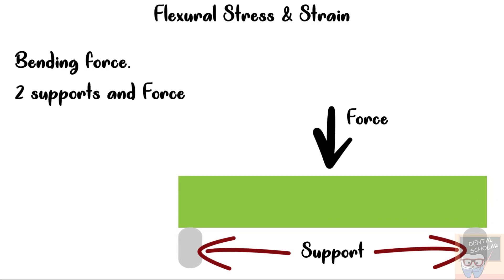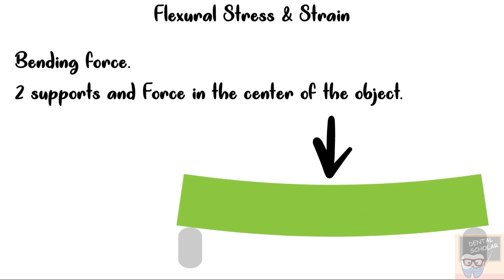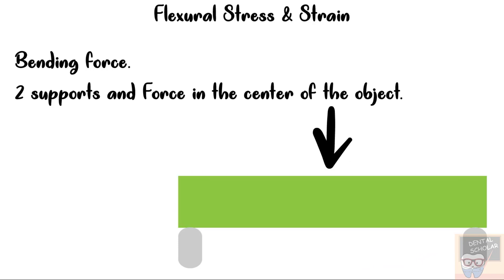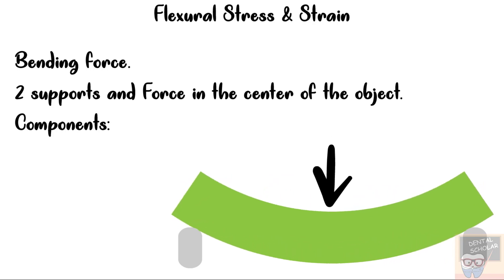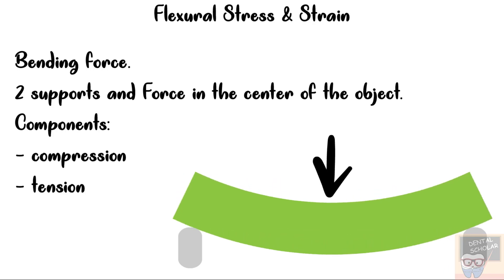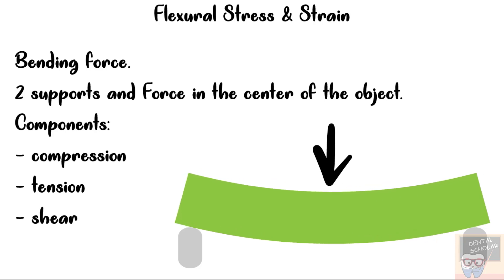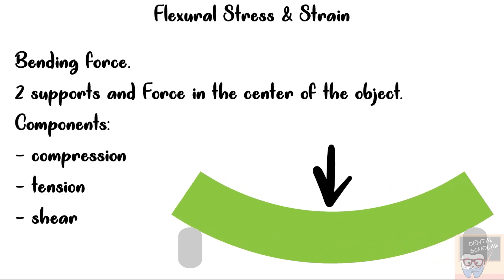Next, let's go to flexural stress and strain, also known as bending stress. Unlike the stresses seen so far where there was one support and one force, here we have at least two supports and one force acting in the center of the object. An object under flexure experiences all three types of simple stress: the side on which force is applied experiences compression, the opposing side experiences tension, and shear is seen at the supports.